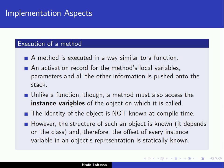The identity of the object is not known at compile time because we might be sending an object of a subclass or superclass type. So we don't know the exact type of object we will be handling at runtime. But the structure of such an object is known — it depends on the class, and therefore the offset of every instance variable in an object representation is statically known at compile time.